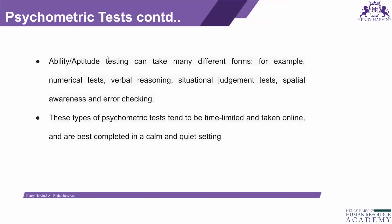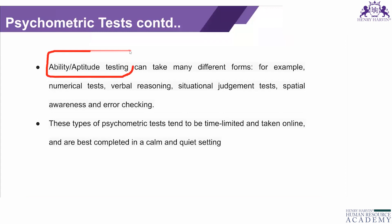There are different kinds of tests for ability and personality. When we test aptitude, different examples include numerical tests — and you must have encountered these in school, college, or entrance exams — verbal reasoning, situational judgment tests, spatial awareness, and error checking. These are all types of aptitude psychometric tests.